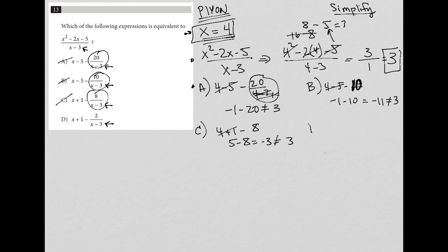Let's try choice D. And we have 4 plus 1 minus 2. And then 4 plus 1 is 5. 5 minus 2 is 3. That matches the 3 that I got from the original question. And therefore, choice D is the best answer here. Thank you.